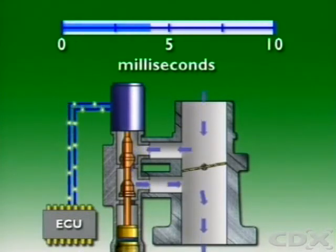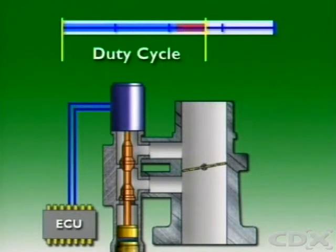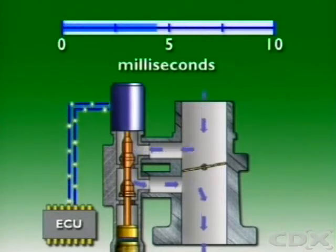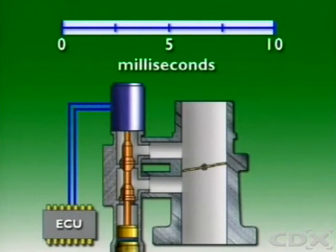This on and off time is called the duty cycle and it's generally expressed as a percentage. Variations in pulse width at the set frequency is called pulse width modulation.